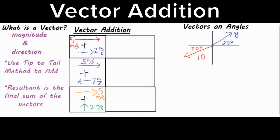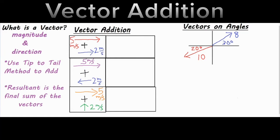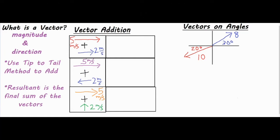In this video I'm going to be talking about what a vector is, how to use something called the tip-to-tail method, and how to find the solution to just about any vector problem. A vector is basically an arrow with a number attached to it — something that has a magnitude, which is its numerical value, and something that has a direction.